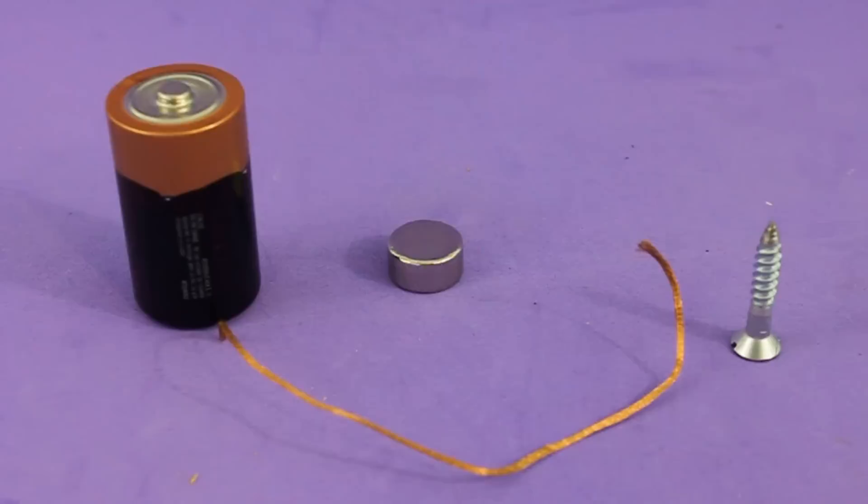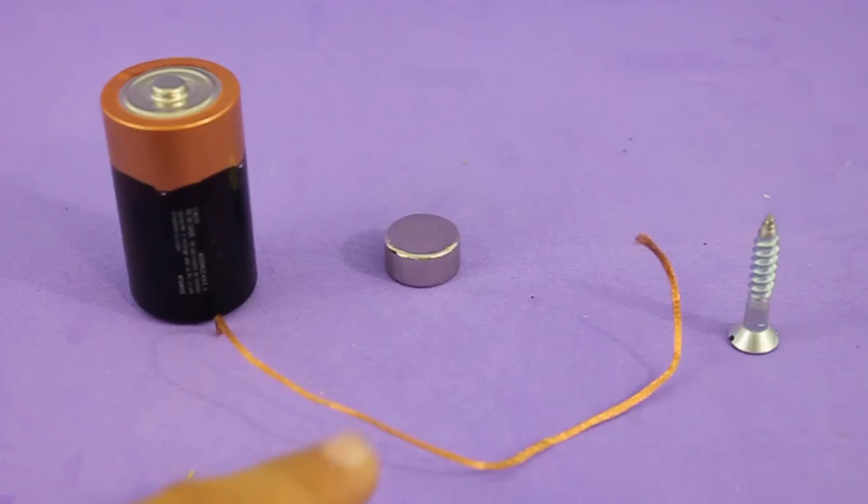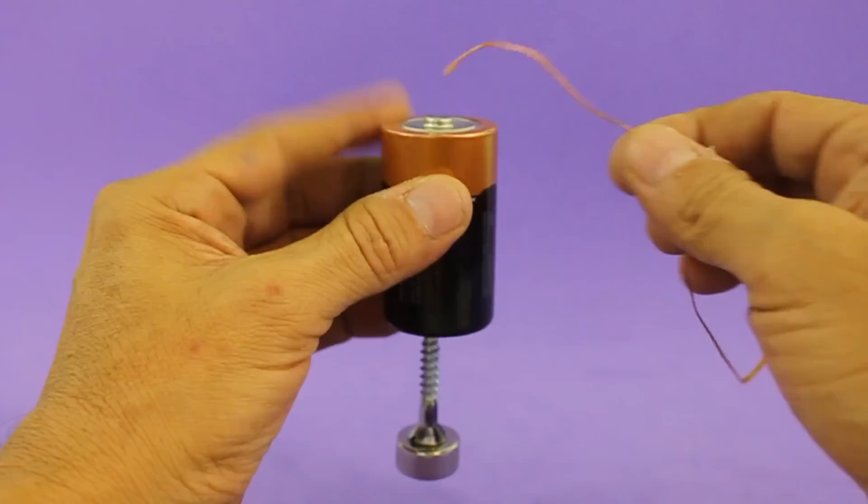Sure you have seen the classic homopolar motor that is built using a battery, a neodymium magnet, a screw or nail and a piece of wire.